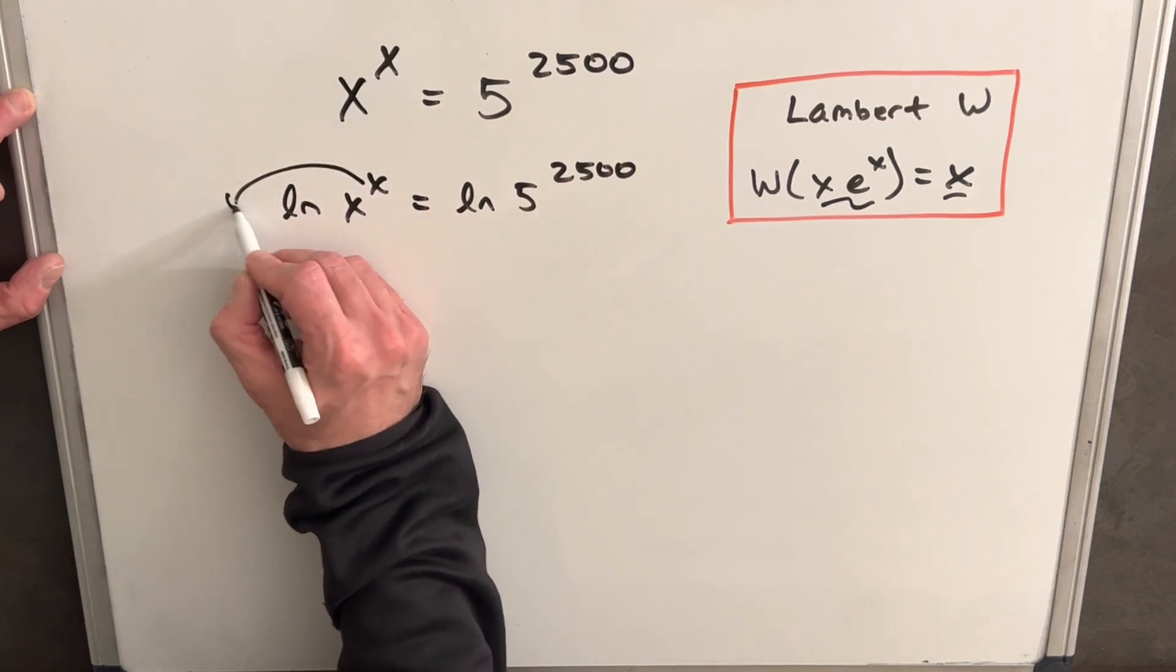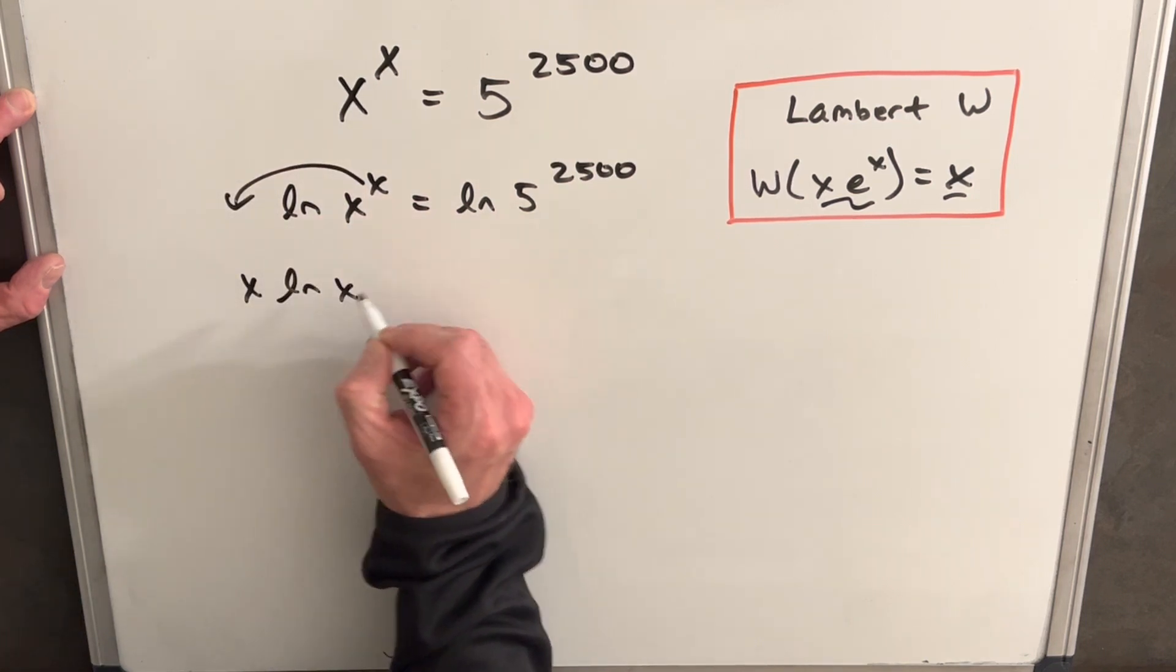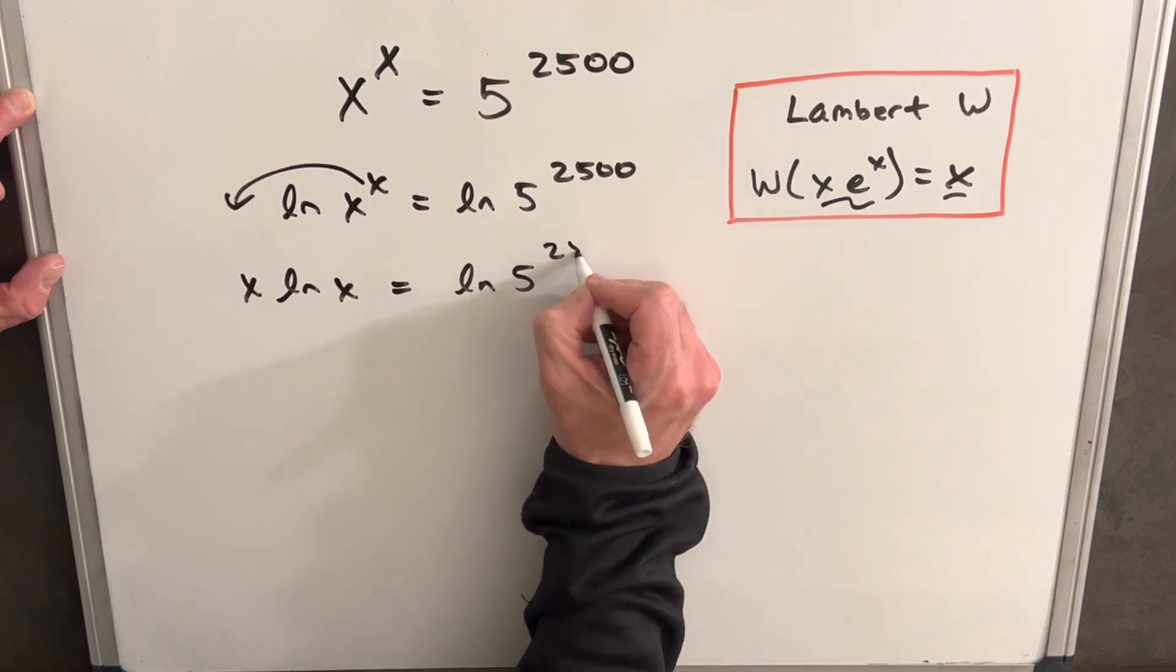Then I can just bring my x out in front, and we're going to have x ln x equals ln 5 to the 2,500.